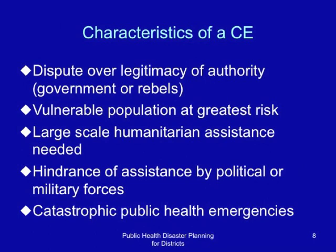There is often dispute over legitimacy of authority, usually between government and other formal or informal groups like rebels and insurgents. The vulnerable population is at greatest risk. Large-scale humanitarian assistance is often needed. There is usually hindrance of assistance by political or military forces, meaning some groups with power may prevent others from receiving assistance. Complex emergencies are usually political and often result in catastrophic public health problems.